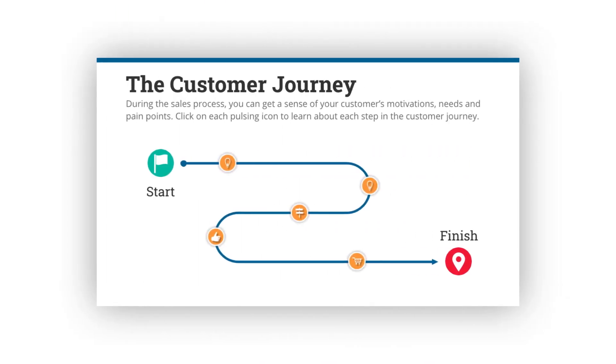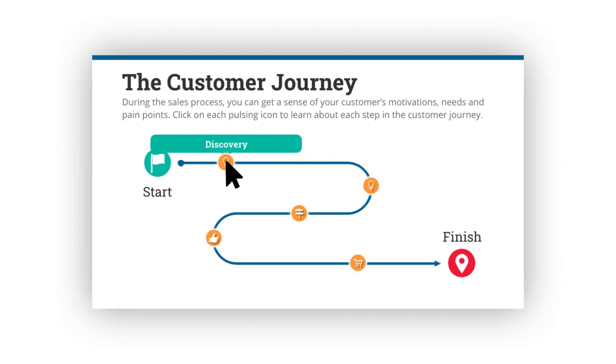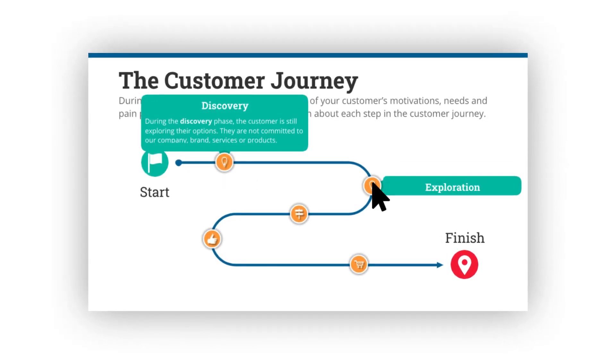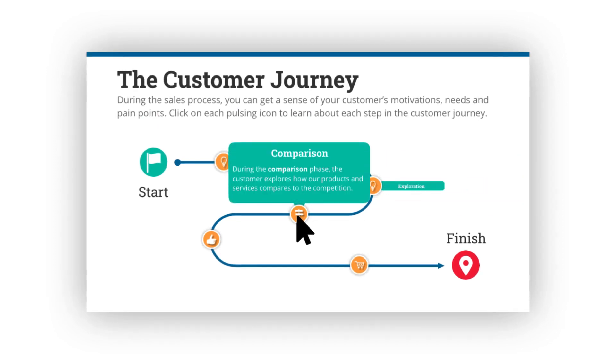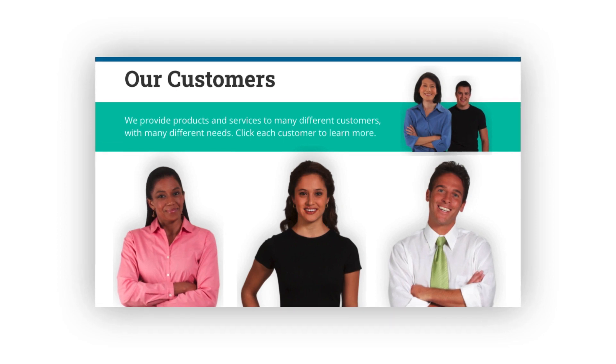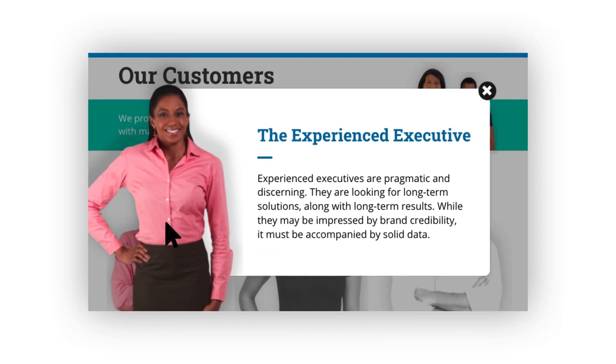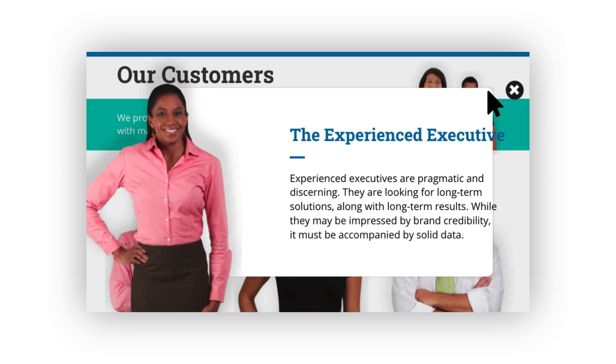So the question is, when does it make sense to use click-to-reveal interactions? I think there are some solid use cases that can help improve knowledge transfer, knowledge retention, and of course the overall learning experience. For example, if you have content that needs to be presented in a series of sequential steps — like this customer journey example here — a click-to-reveal interaction can help to organize that content in a meaningful way. Here's another example where you might want to introduce the learner to a series of characters you use throughout your eLearning course — using a click-to-reveal interaction can help reduce the amount of on-screen text presented at one time.